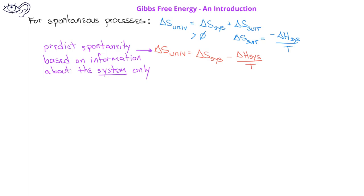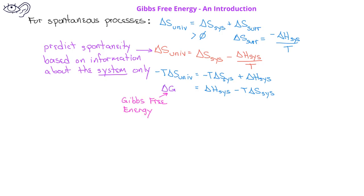We can further rearrange this equation by multiplying both sides by negative T. So we get a new equation: ΔH_system minus T·ΔS_system. This is equal to a new term we call the Gibbs free energy. The change in the Gibbs free energy for a system is equal to the enthalpy change minus the Kelvin temperature times the entropy change for the system.